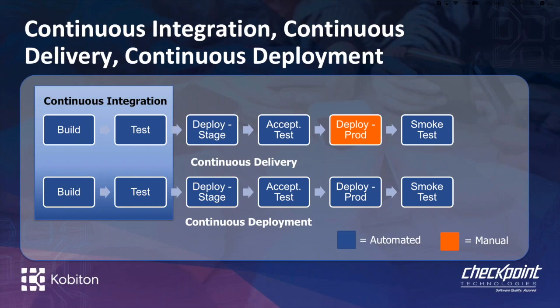That distinction makes a lot of sense to highlight because people use CI/CD and DevOps interchangeably, and they can overlap — but the CD in CI/CD can mean either continuous delivery or continuous deployment, and you really don't know until you ask. So it's important to distinguish between the two. Now that we're clear on those terms, we can understand why the speed of delivery makes it so important to develop a proper framework.